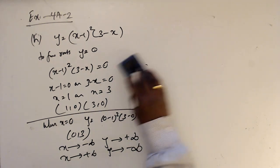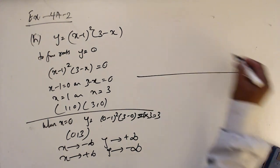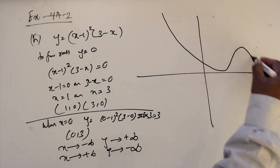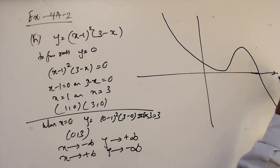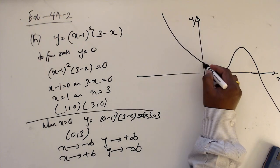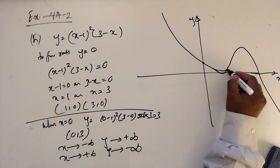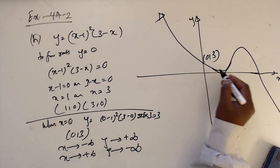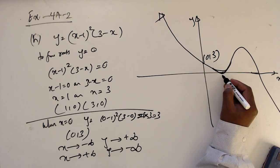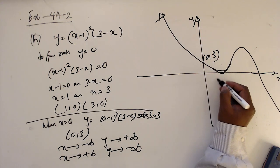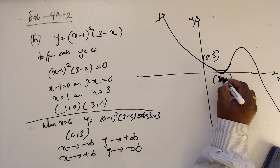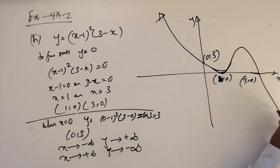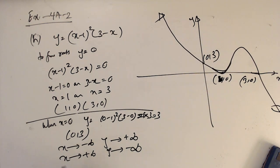Drawing the axes, the key points are: y-intercept at (0, 3), repeated root at (1, 0), and simple root at (3, 0). You can compare this with the previous one — in part G the factor is (3+x) and here in part H it is (3-x), showing the similarities and differences.